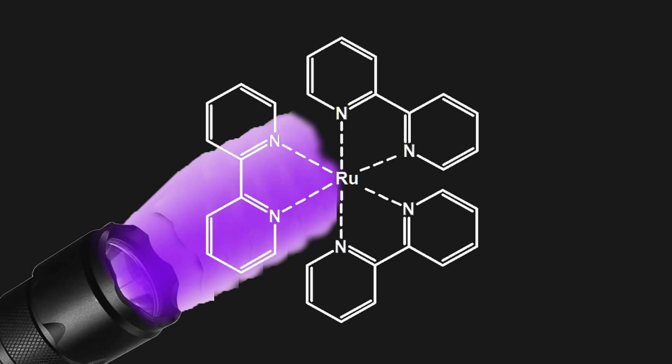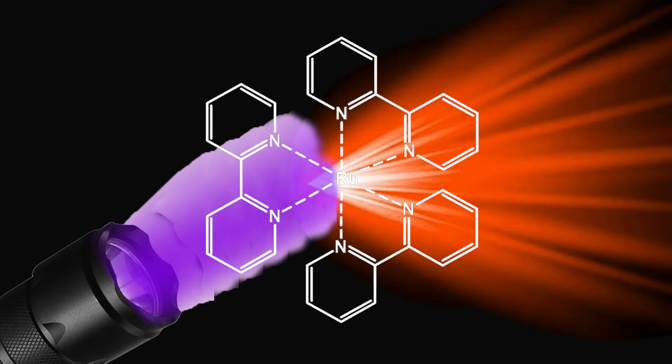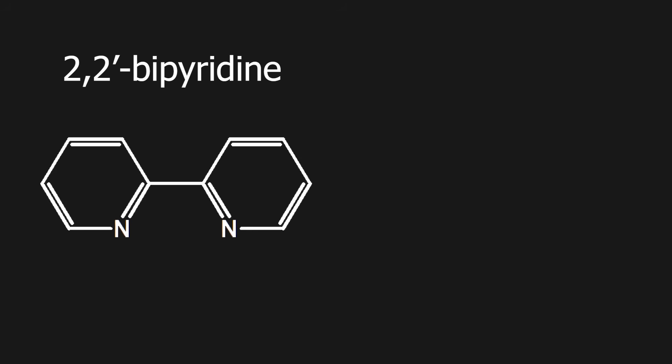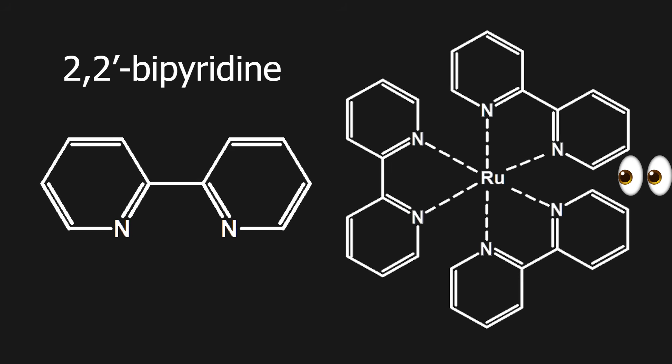It exhibits strong fluorescence and emits a red-orange light when irradiated by UV light. Since I can use the bipyridine for another project, I will be making it myself. And I also want to see what the ruthenium complex looks like in real life, so let's get to making it.